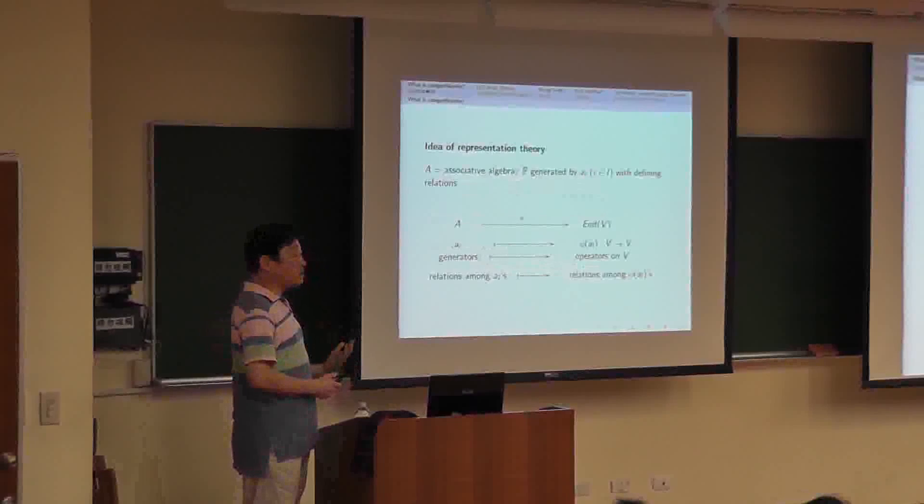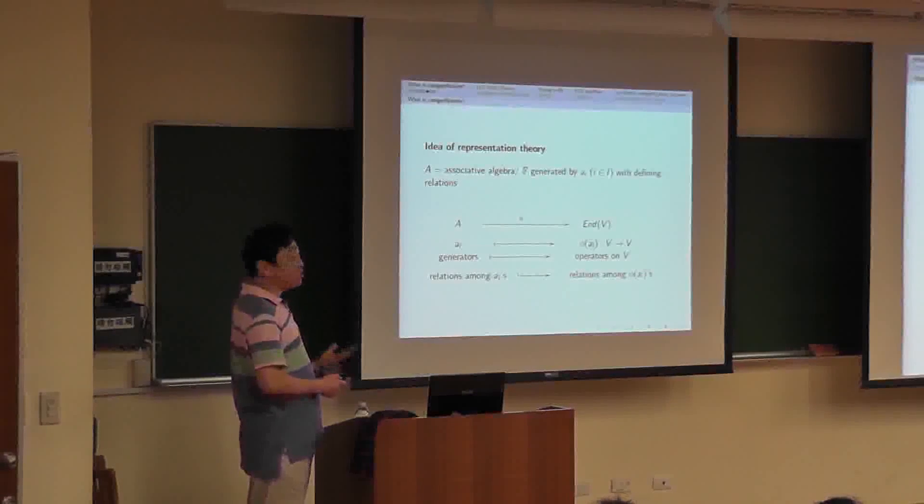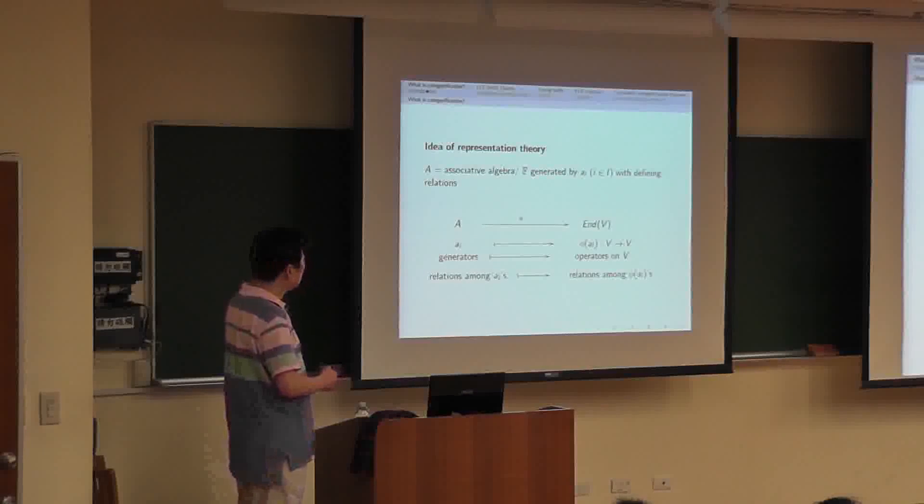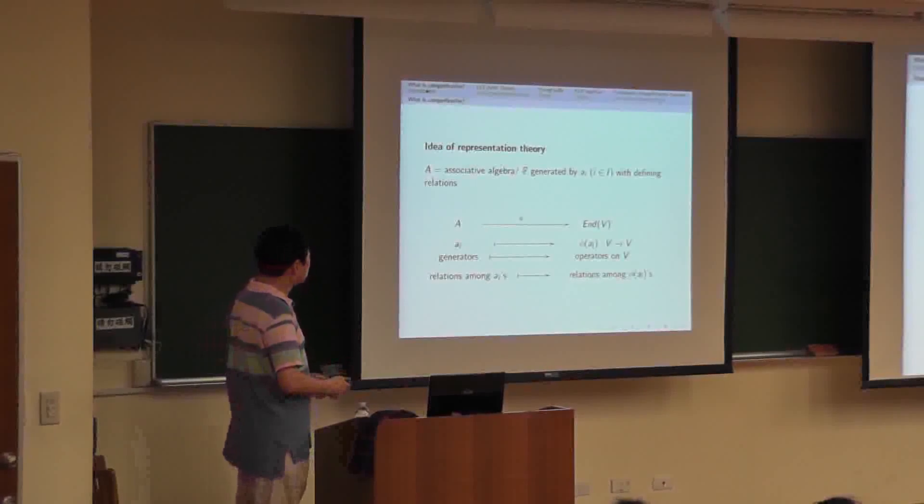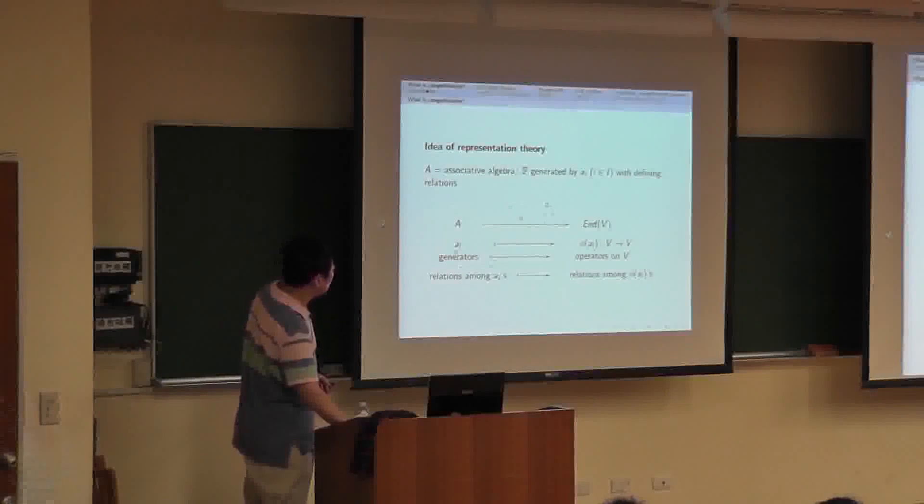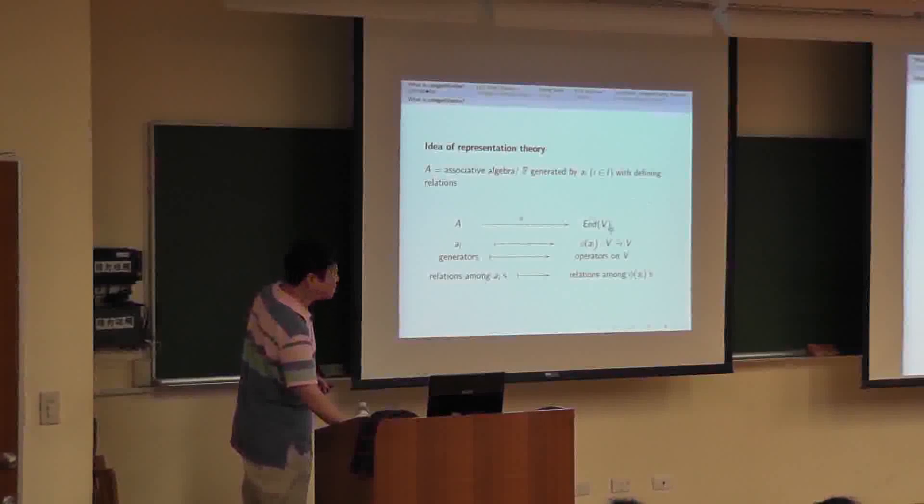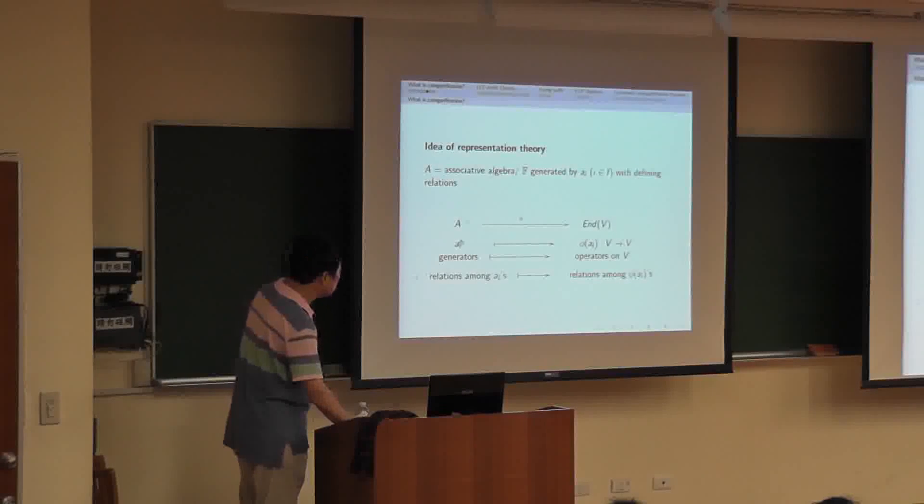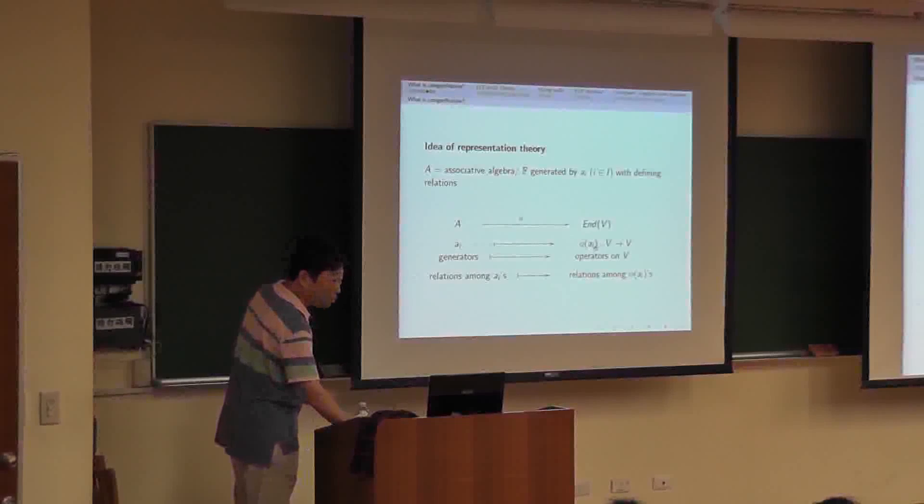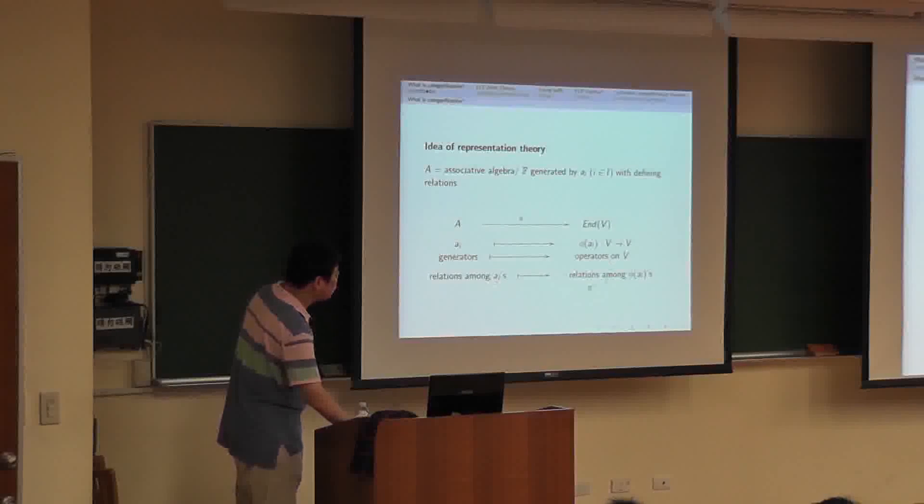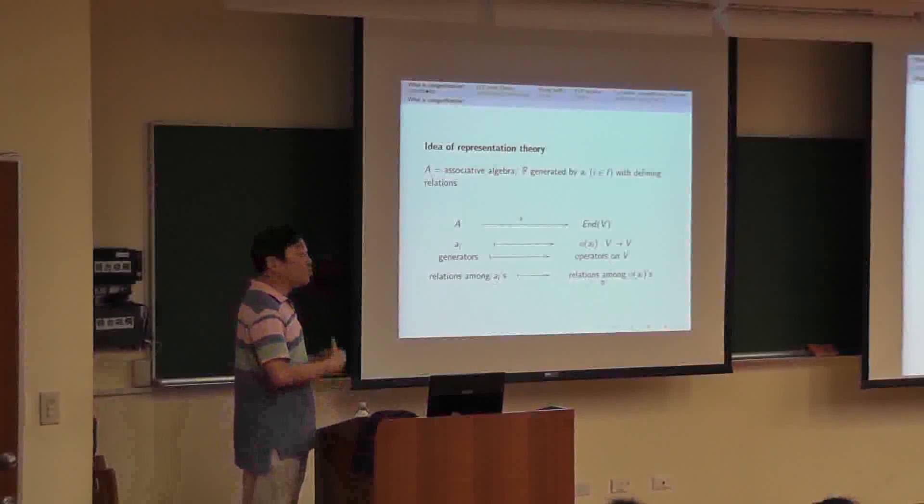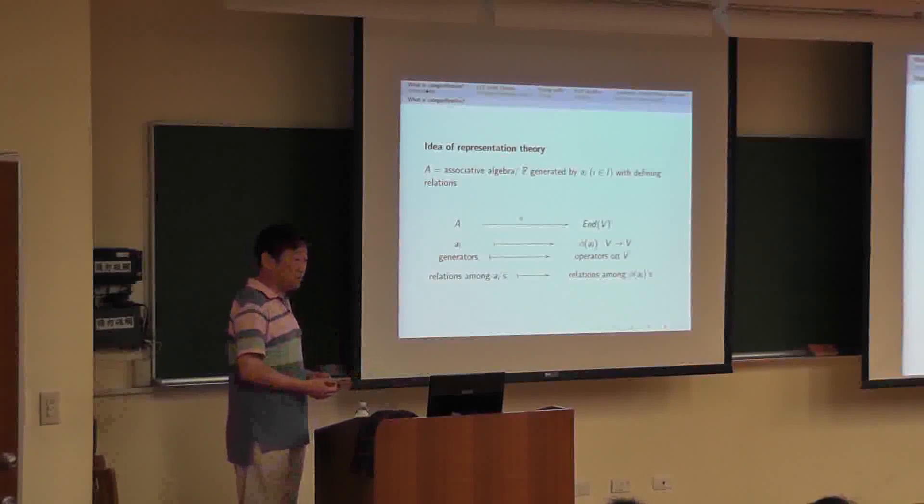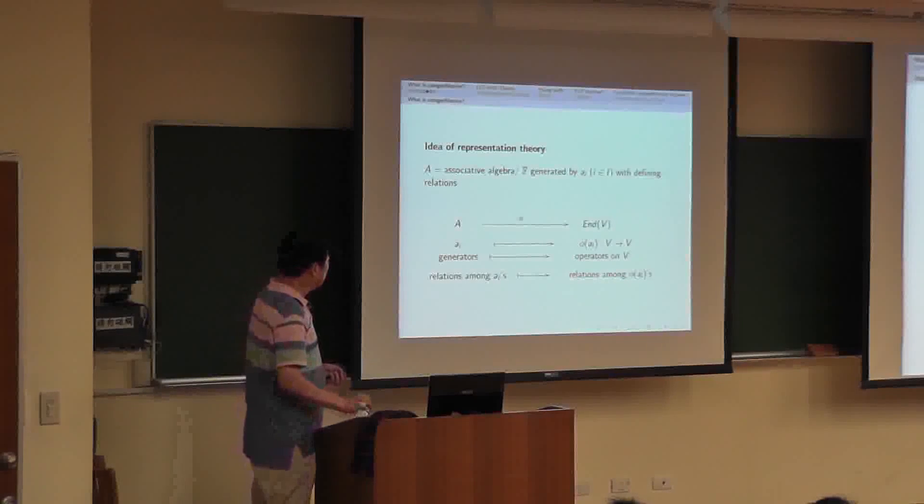Now, what is representation theory in the simplest terms? Suppose we have an algebraic structure with generators a_i and with some defining relations. Then what is the representation? We take a vector space and the generators are mapped onto linear operators, and the defining relations among these generators are mapped onto relations among linear operators. And we investigate these correspondences, and that's the main idea of representation theory.